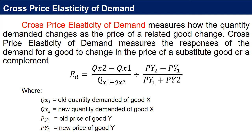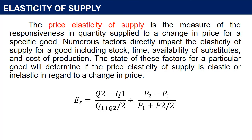Cross price elasticity of demand measures how the quantity demanded changes as the price of a related good changes. It measures the responses of the demand for a good to a change in the price of a substitute good or a complement. The price elasticity of supply is the measure of the responsiveness in quantity supplied to a change in price for a specific good. Numerous factors directly impact the elasticity of supply, including stock time, availability of substitutes, and cost of production, which determine whether supply is elastic or inelastic.